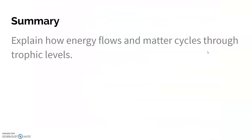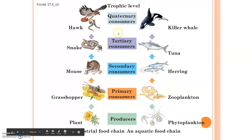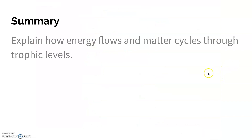Summary: explain how energy flows and matter cycles through the trophic levels. Make sure you are familiar with these different vocabulary terms: producers, primary consumers, secondary consumers, tertiary, and quaternary, because it's going to come up a lot.